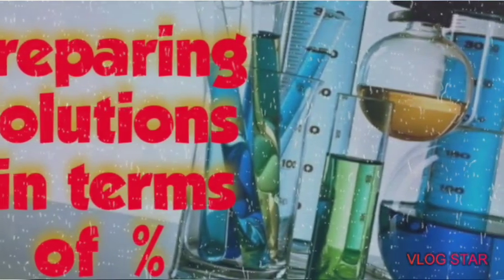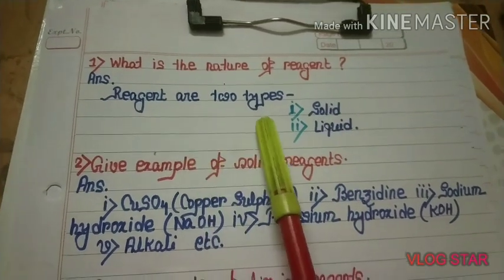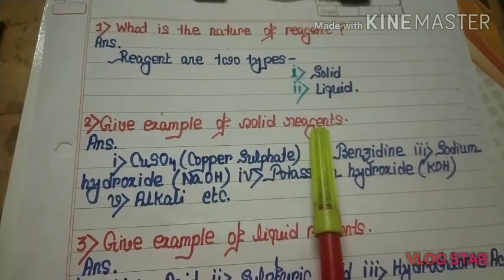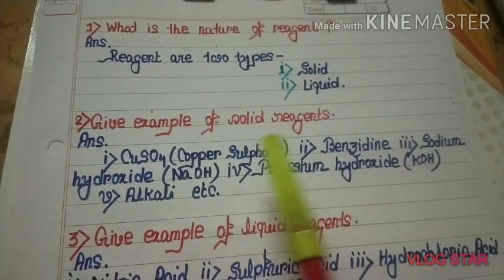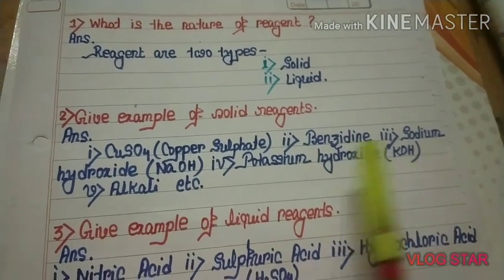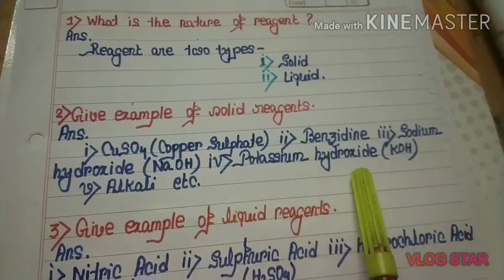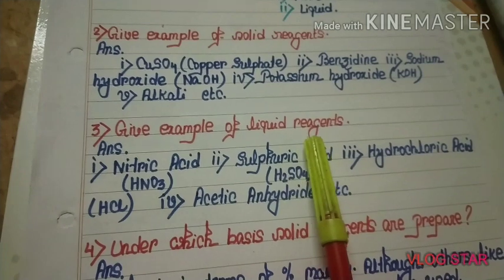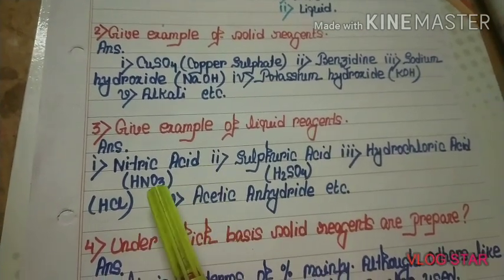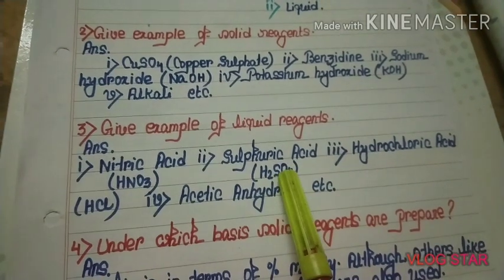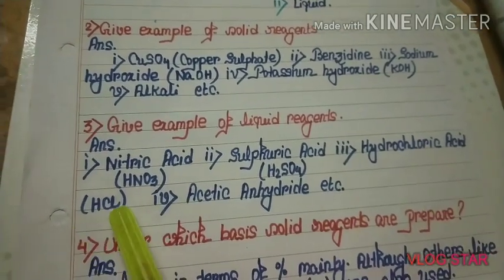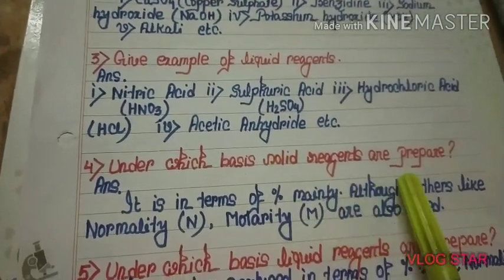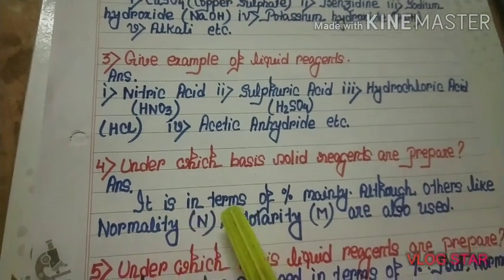What is the nature of reagents? Reagents are two types: solid and liquid. Examples of solid reagents are copper sulfate (CuSO₄), benzidine, sodium hydroxide (NaOH), potassium hydroxide (KOH), alkali, etc. Examples of liquid reagents are nitric acid (HNO₃), sulfuric acid (H₂SO₄), hydrochloric acid (HCl), acetic anhydride, etc.